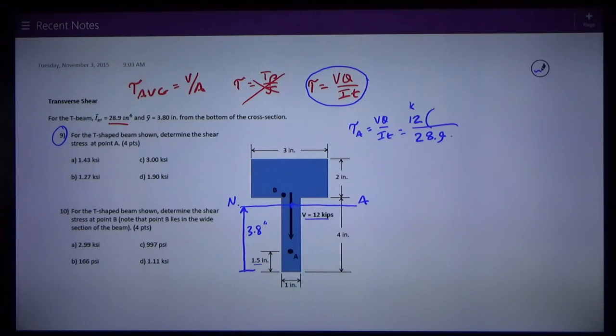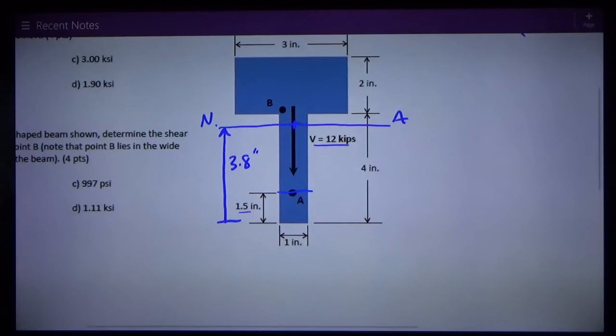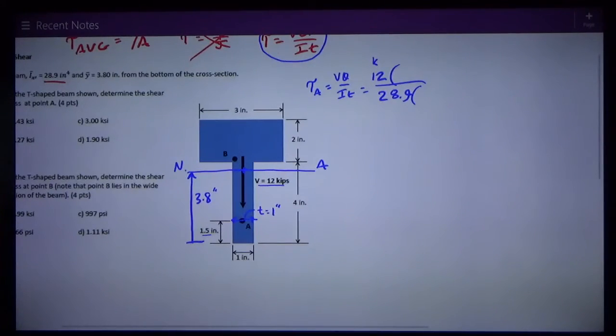T is the thickness of the cross section at the point where we're calculating shear. We're calculating shear right here at point A. Therefore, that distance is T. So it's one inch.